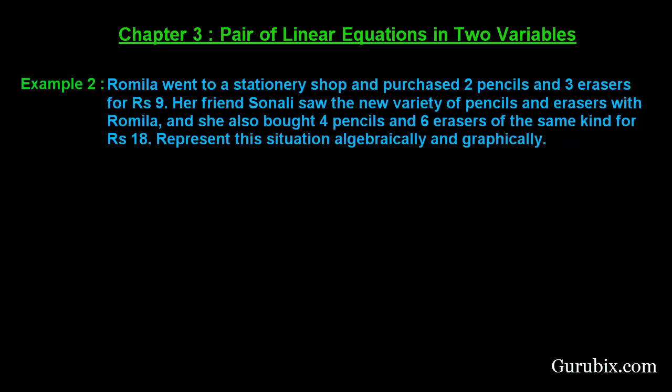Welcome friends, let us solve example number two of chapter three. The example is as follows: Romila went to a stationery shop and purchased two pencils and three erasers for rupees nine. Her friend Sonali saw the new variety of pencils and erasers with Romila and also bought four pencils and six erasers for rupees 18. Represent this situation algebraically and graphically.